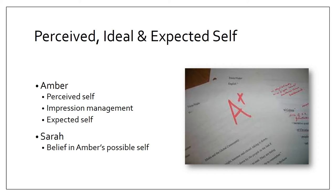This view, looking inward, is typically an aspect of yourself that you would be hesitant in sharing with others. Amber wanted to be a good student, but just did not want to put in the work. Her ideal self — being a good student — did not align with her perceived self, so she engaged in impression management, which is to exercise control over your behavior in an effort to elicit the desired reaction. Using Sarah's paper to boost her own grade helped Amber get a response she wanted, which was an A.